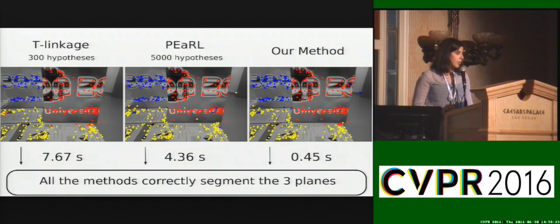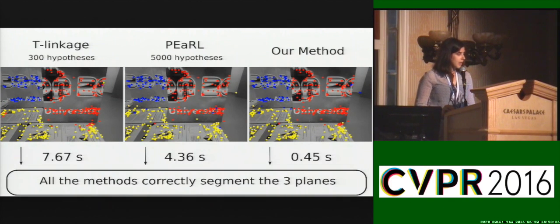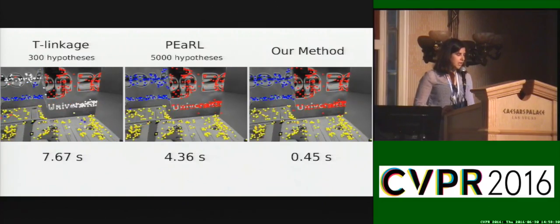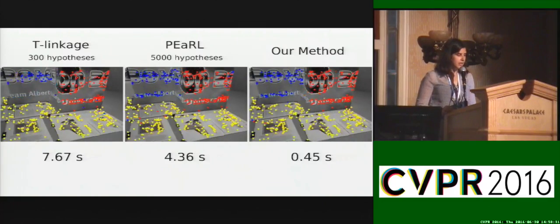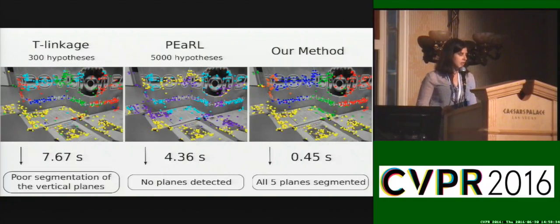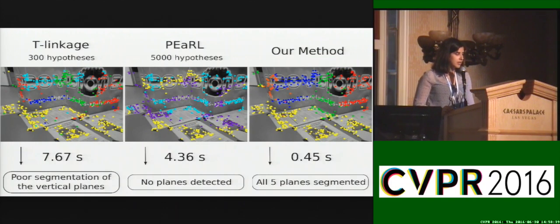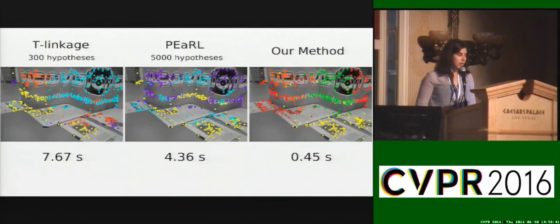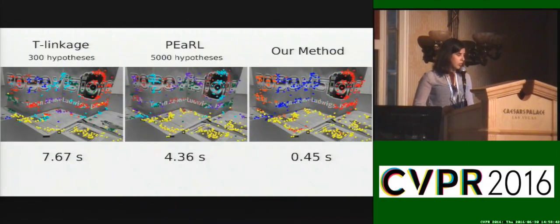We compare two methods that perform multimodal fitting with a method that makes use of our proposed direct metric to create a matrix of similarities, which is used as input to the affinity propagation clustering scheme. Besides being much faster than the competing methods, this example shows the clear superiority of our approach.